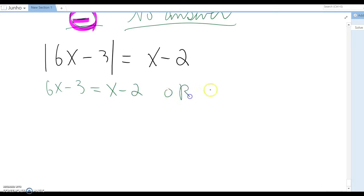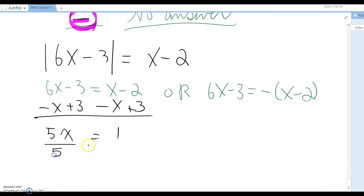But it is the same way we can do that, so just make 6x - 3 = x - 2, or 6x - 3 = -(x - 2). Then this becomes minus x at the same time plus 3, then 5x = 1, and divide by 5, then x = 1/5.